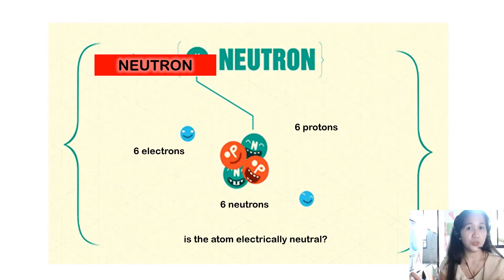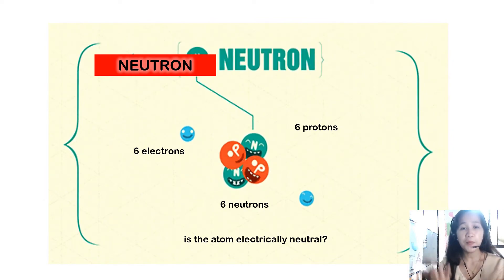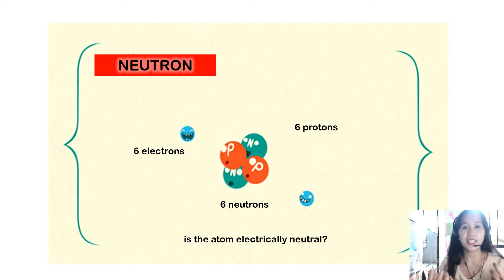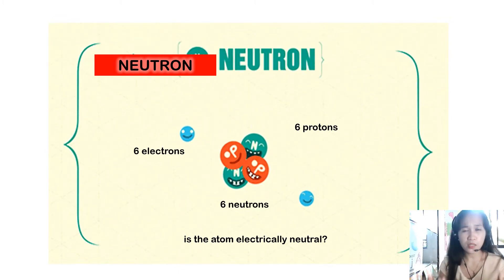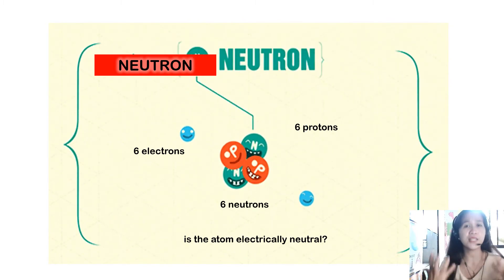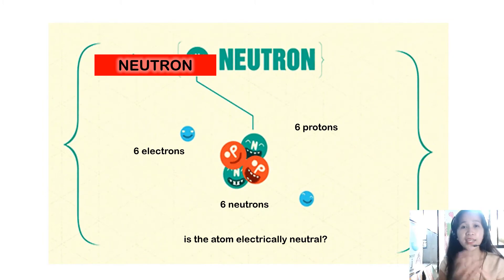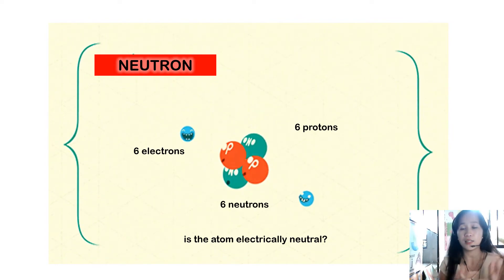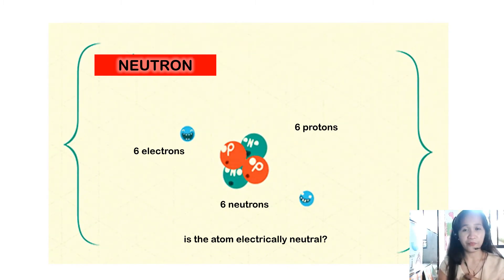Is that atom electrically neutral? Since we said that atoms are neutral when the number of protons equals the number of electrons, and this atom has 6 electrons and 6 protons — yes, they are equal, so the atom is neutral. The number of neutrons does not affect this.